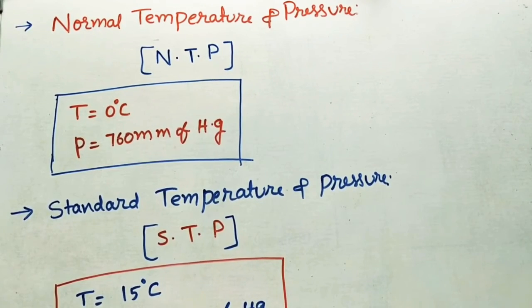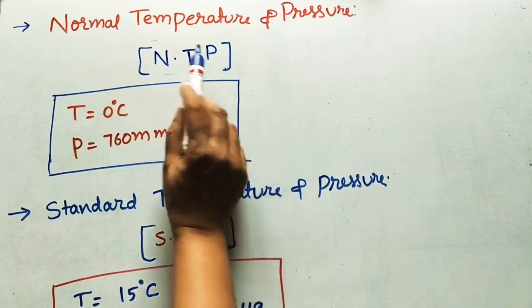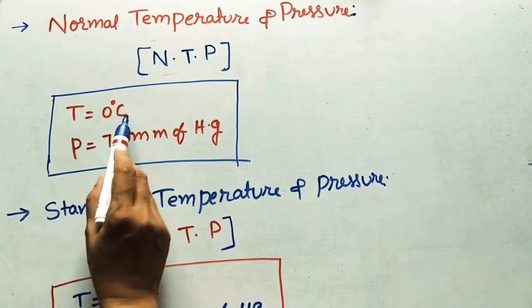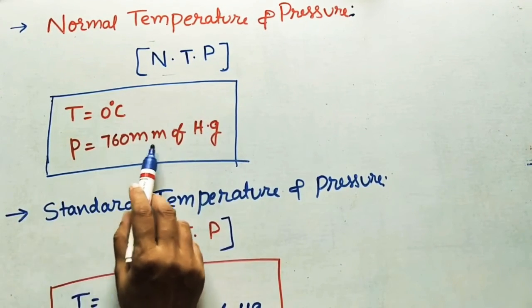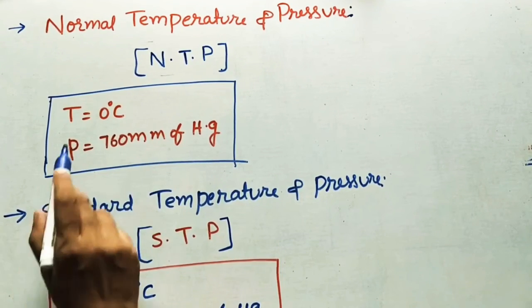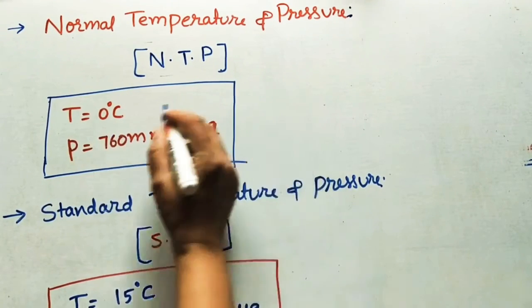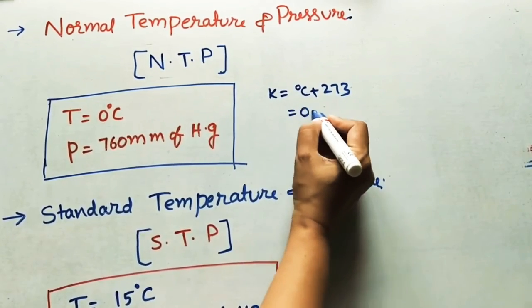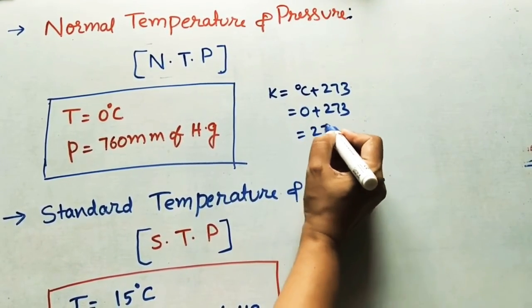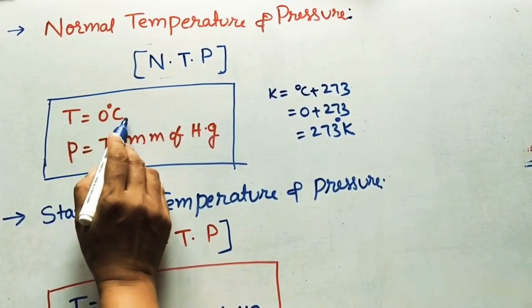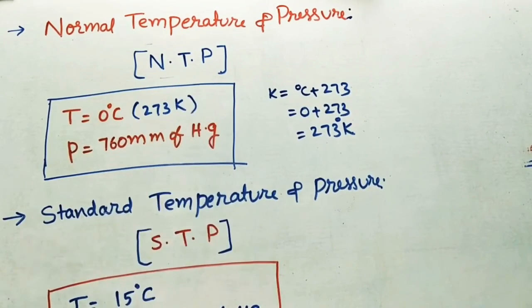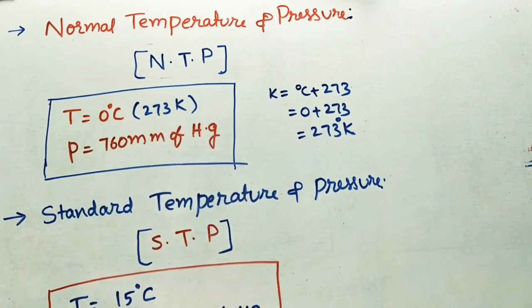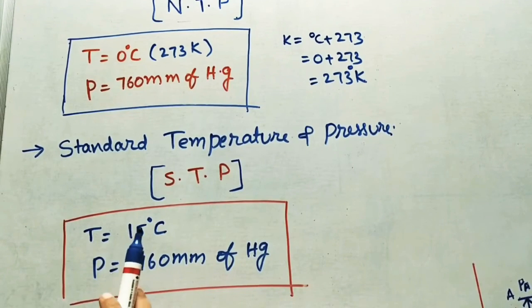In thermodynamics problems, NTP conditions are sometimes given. NTP stands for Normal Temperature and Pressure. The normal temperature is 0°C and the pressure is 760 mm of Hg (atmospheric pressure). Converting to Kelvin using the relation K = °C + 273, we get 0 + 273 = 273 K. So NTP conditions are: temperature = 0°C or 273 K, pressure = 760 mmHg.